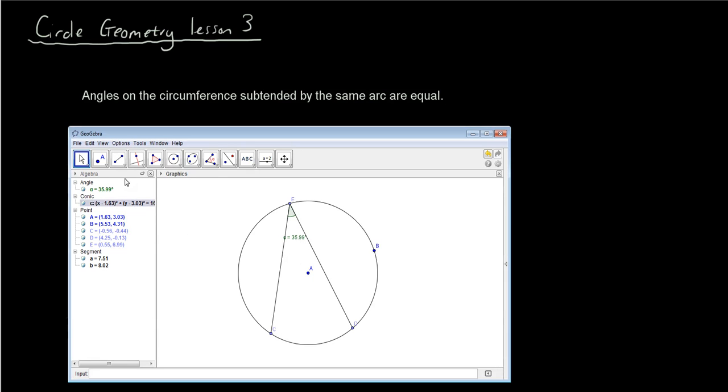Okay, now I'll put another point anywhere on the circumference. Let's say I put the point here and join point C to this point and point D to this point again.